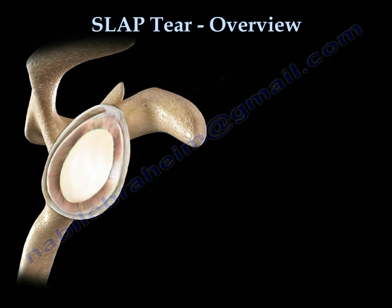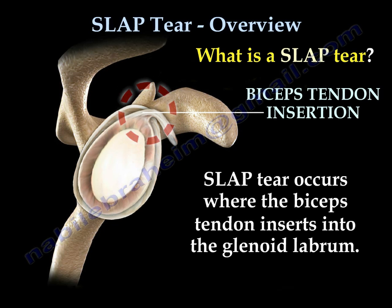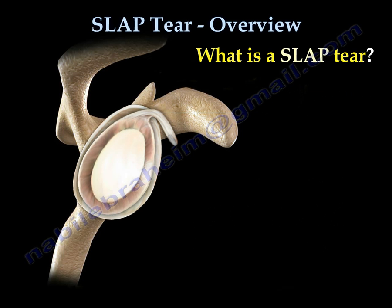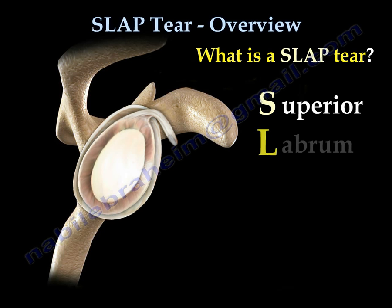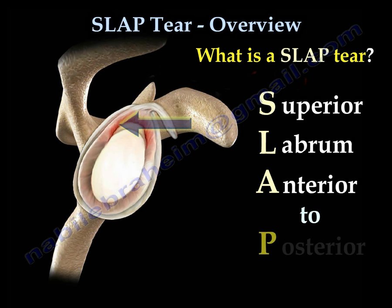What is a SLAP tear? A SLAP tear occurs where the biceps tendon inserts into the glenoid labrum. The term SLAP tear refers to Superior Labrum Anterior to Posterior.